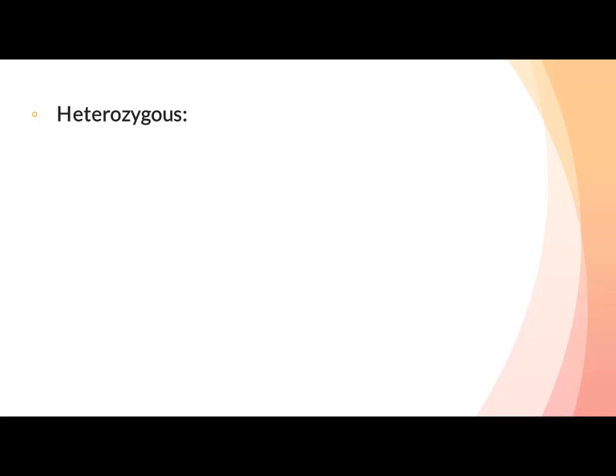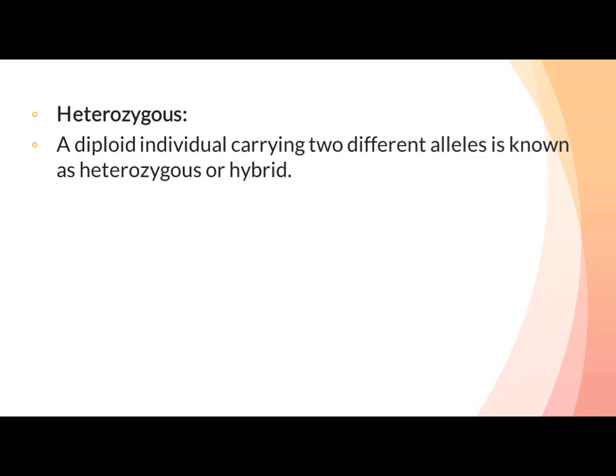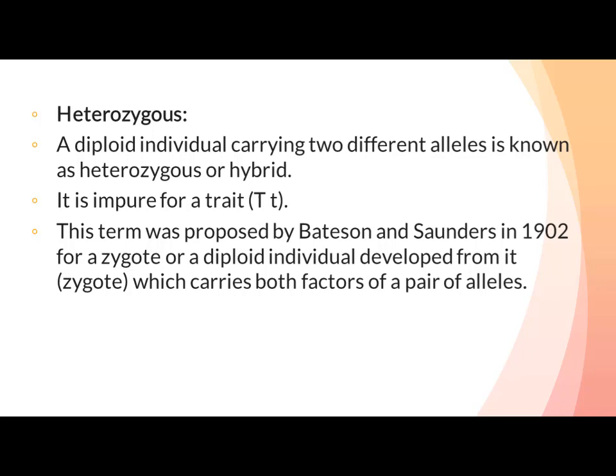Heterozygous: A diploid individual carrying two different alleles is known as heterozygous or hybrid. ایسا diploid organism جس میں gene کے دونوں alleles different ہوں — ایک dominant اور دوسرا recessive — اسے heterozygous یا hybrid organism کہتے ہیں۔ It is impure for a trait. This term was proposed by Bateson and Saunders in 1902 for a zygote or diploid individual that carries both factors of a pair of alleles.